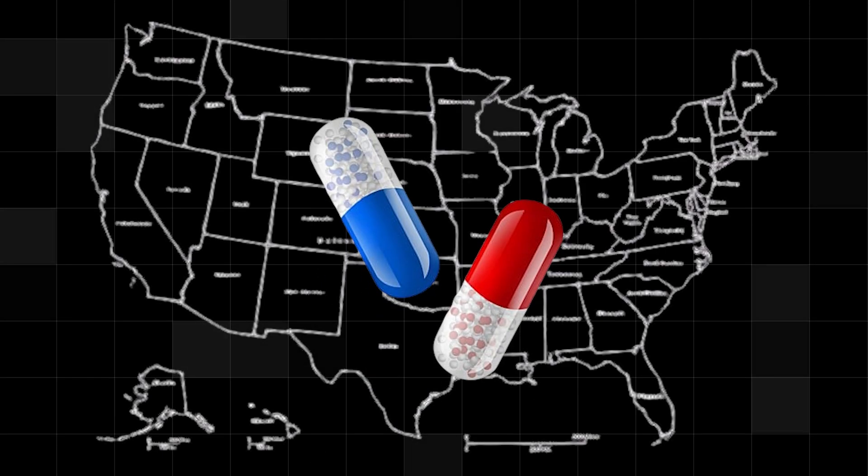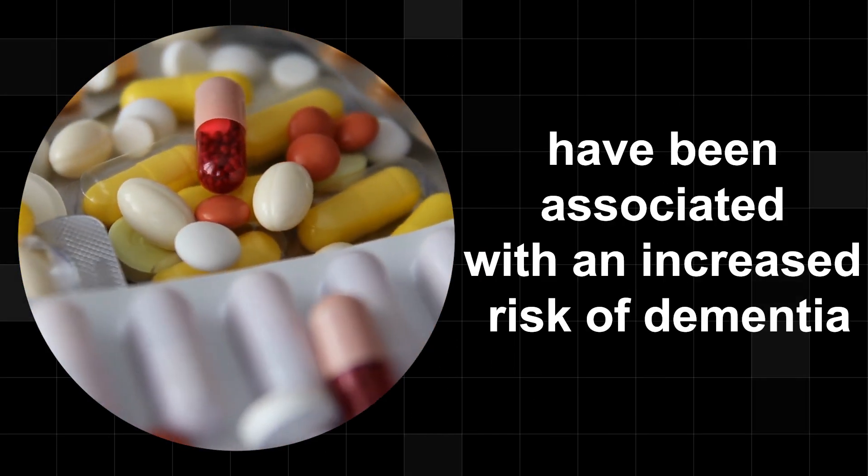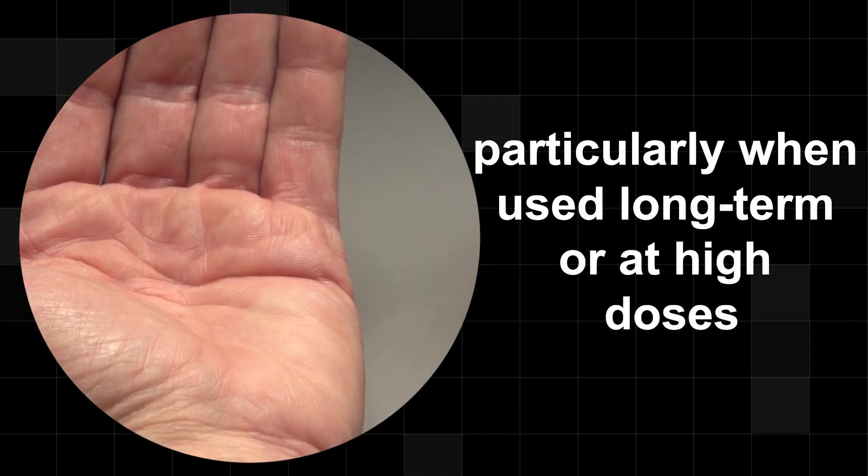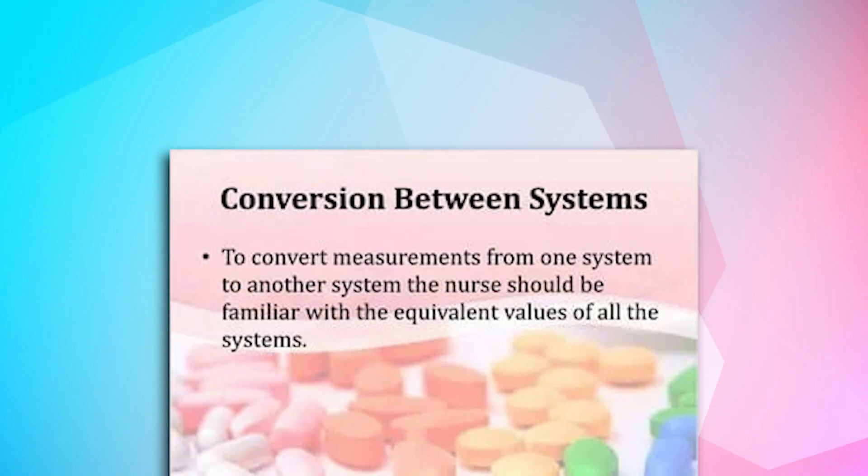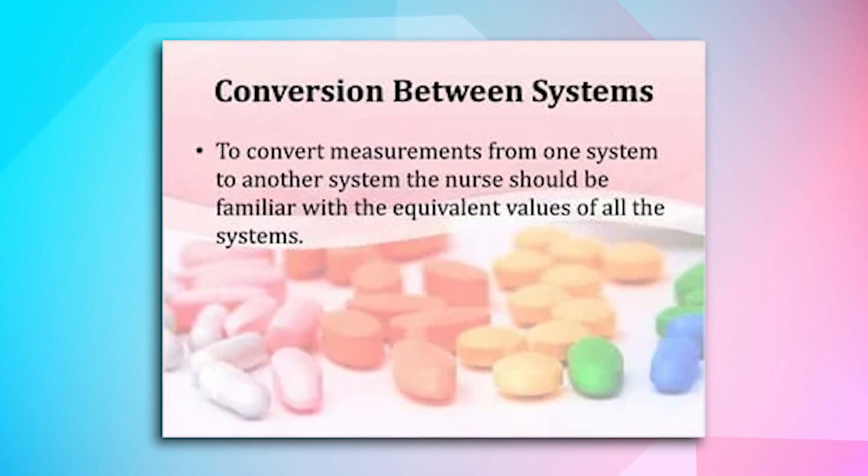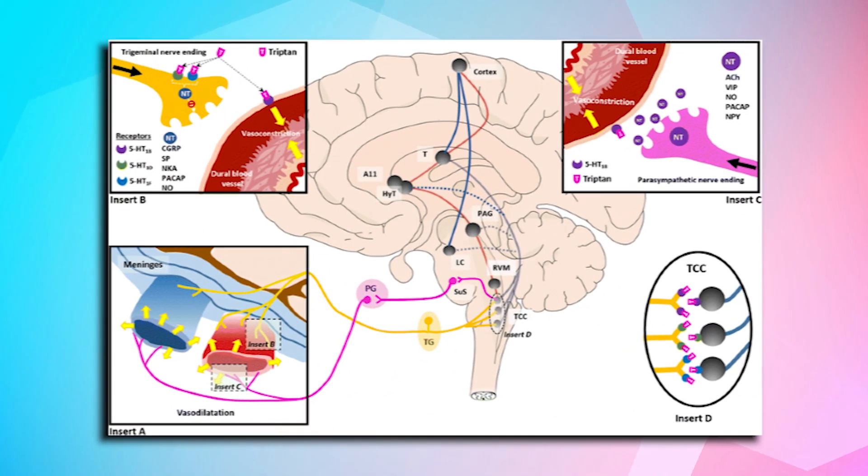Several popular medications in the United States have been associated with an increased risk of dementia, particularly when used long-term or at high doses. Below is a detailed overview of some of these medications and their potential mechanisms.